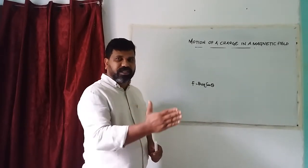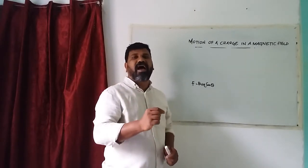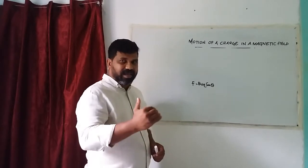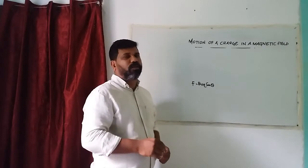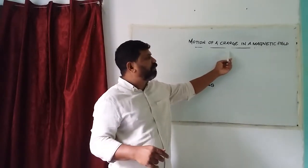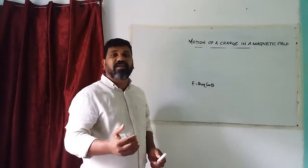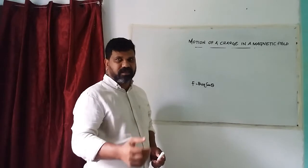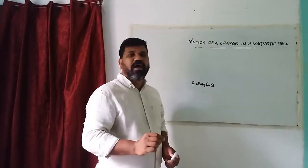The velocity vector makes an angle with the magnetic field. What is the angle of the magnetic field? Everything is going to be balanced. That is one way.